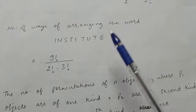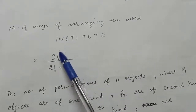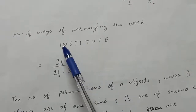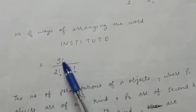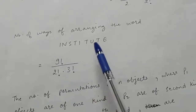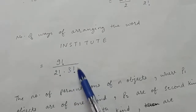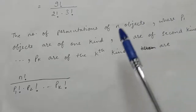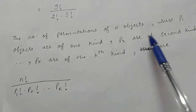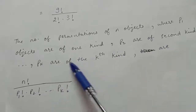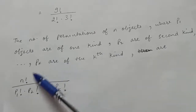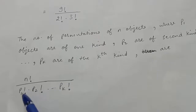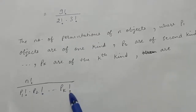The number of ways to arrange the word INSTITUTE: there are 9 letters in total, which can be arranged in 9! ways if all were distinct. But I repeats twice, so divide by 2!, and T repeats 3 times, so divide by 3! also. This leads to the general formula: the number of permutations of n objects where p1 are of one kind, p2 of another, and so on up to pk, is n! / (p1! × p2! × … × pk!).